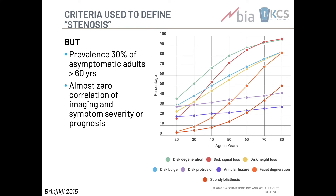As we showed previously, the prevalence of significant degenerative changes in asymptomatic adults over the age of 60 years is anywhere up to 30%. As such, we really have to question the correlation between imaging findings and symptom severity and prognosis. It's about bringing together the history, the clinical findings, and then appropriate investigation.